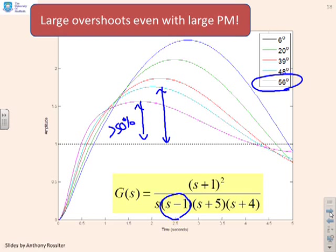That's a warning that when you've got right half-plane factors, different rules may apply. It can be difficult to generalize because it depends what else is within the dynamics.